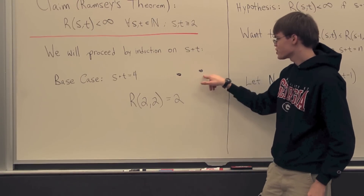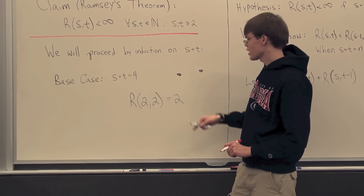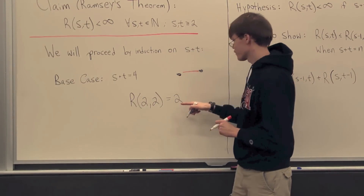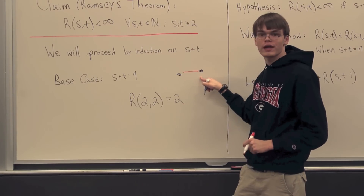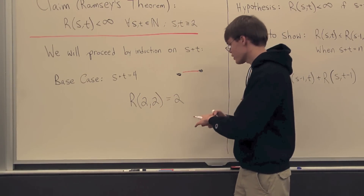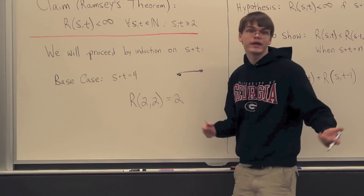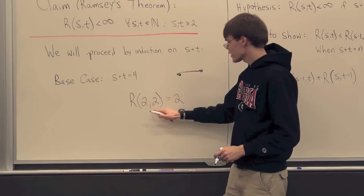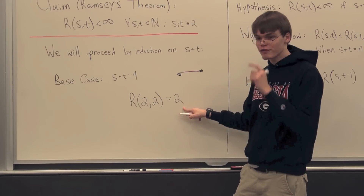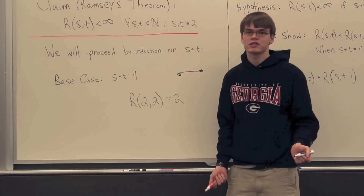In K_2 we have two vertices and an edge between them, which can be colored either red or blue. If it's colored red, we're finished — we have a red monochromatic subgraph of size 2, satisfying the first property. If we colored this edge blue instead, again we're finished — that satisfies the second property. So 2 has to be the minimum number of vertices such that this property holds, because an edge coloring simply doesn't make sense on a single vertex.